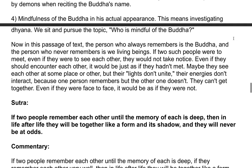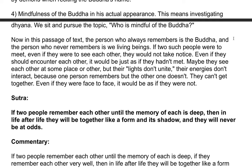The fourth method is mindfulness of the Buddha in his actual appearance, which means investigating dhyana. Visit and pursue the topic: who is mindful of the Buddha? In this passage of text, the person who always remembers the Buddha and the person who never remembers are we living beings. If two such people were to meet, even if they were to see each other, they would not take notice. Even if they should encounter each other, it would be just as if they hadn't met. Their energies don't interact because one person remembers but the other one doesn't.